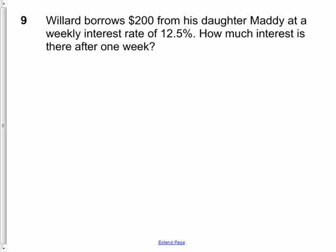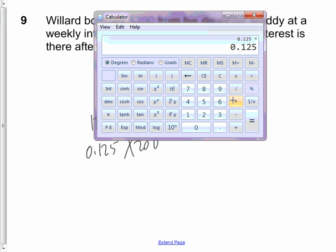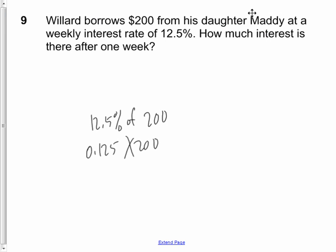Question 10 says, Willard, what a lovely name, borrows $200 from his daughter Maddie, what an equally lovely name, at a weekly interest rate of 12.5%. How much interest is there after just one week? So 12.5%, so if it's $200, I want to figure what is 12.5% of $200. 12.5% is 0.125 times 200. So if I go Desmos, .125 times the $200 I owe Maddie, I would owe $25 in interest.